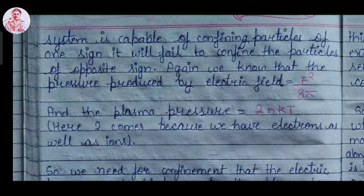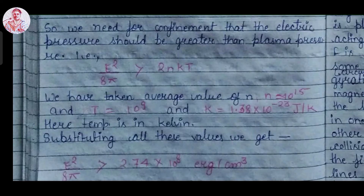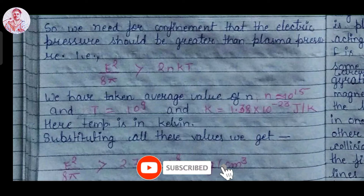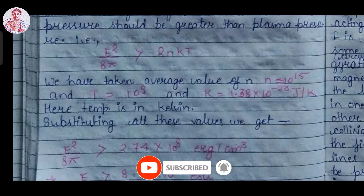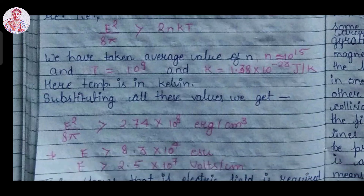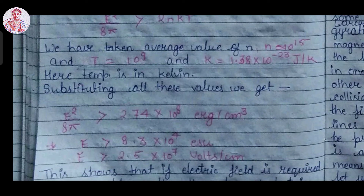The plasma pressure is equal to 2nkT. The factor of 2 comes because we have electrons as well as ions. For confinement, the electric pressure should be greater than the plasma pressure, so E squared over 8 pi should be greater than 2nkT. Taking the average value of N as approximately 10 to the power 15 and temperature as 10 to the power 9 Kelvin, and Boltzmann constant as 1.38 into 10 to the power minus 23 Joule per Kelvin, substituting these values we get E squared over 8 pi greater than 2.74 into 10 to the power 18 erg per centimeter cube.